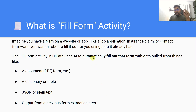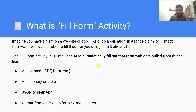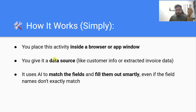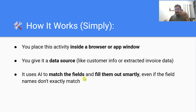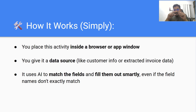It requires certain data and will automatically understand where that data fits. Just like a human — if you look at a column name in Excel, you understand where it should go — the AI uses its cognitive abilities to decide where the data best fits and automatically fills the form. The key benefit: even if the field names don't exactly match, the AI can still identify where each piece of data should go. That's what this Fill Form activity is going to help with.